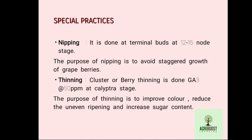Special practices in grape cultivation include nipping and thinning. Nipping means the removal of apical dominance — it is done at the terminal bud at the 12 to 15 node stage to avoid staggered growth of grape berries. Thinning means the removal of flower or grape clusters from the grapevine.